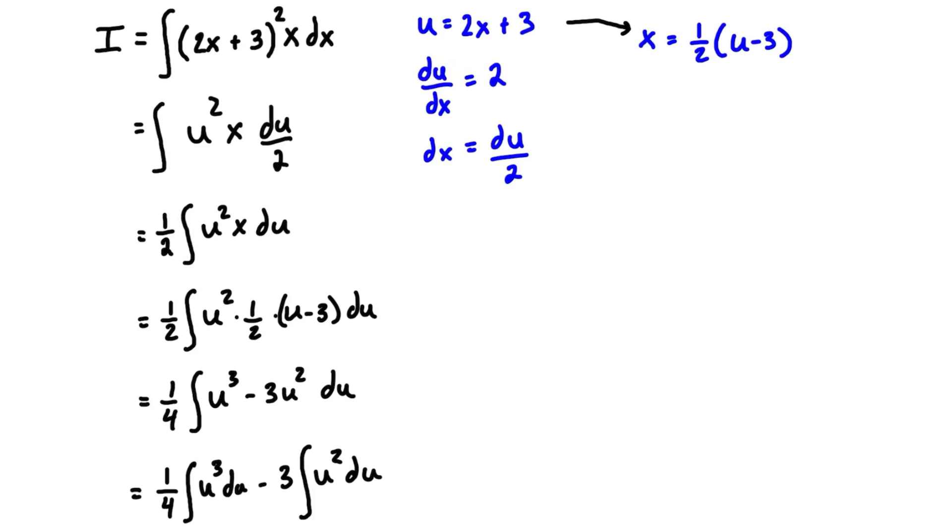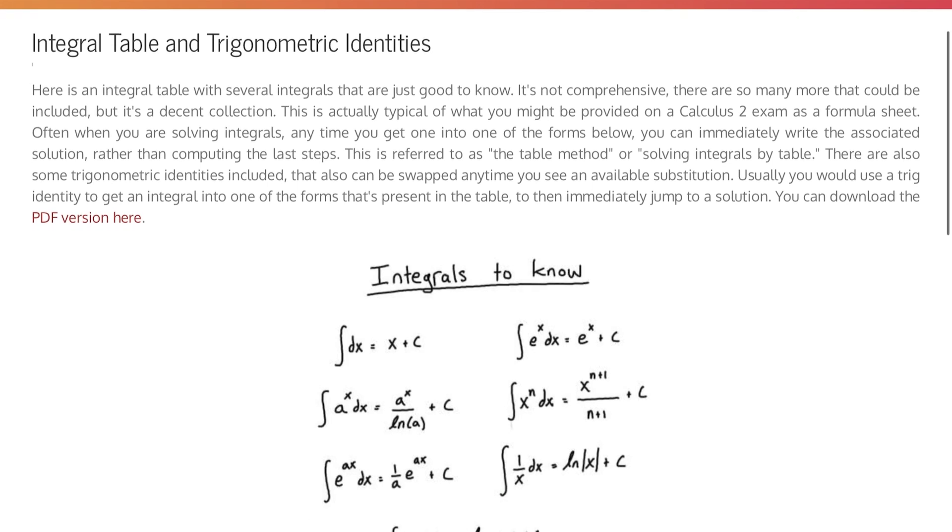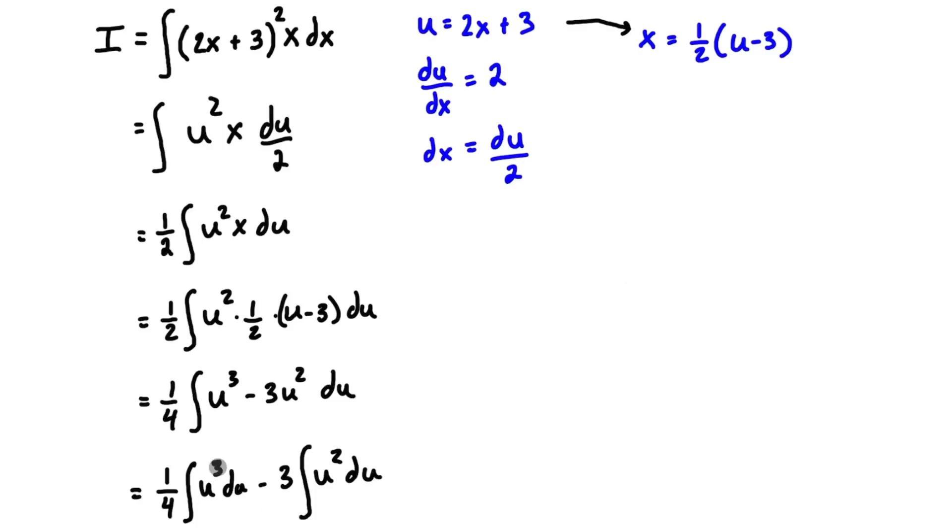If you know how to solve these integrals by memory, you can just do that, but if you can't remember, we can look at the table. There's a link in the description to Engineer4Free. We're looking for ones that have the form x^n dx = x^(n+1)/(n+1) + C. This is the substitution we're going to make. In this case, n is 3 in this term and n is 2 in this term.